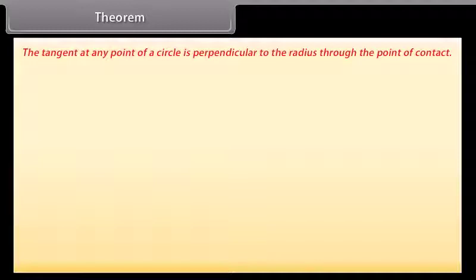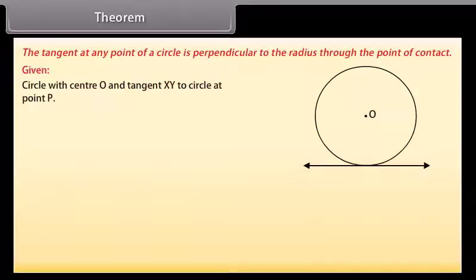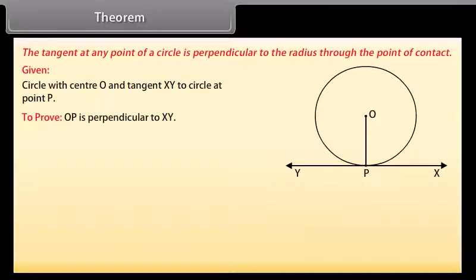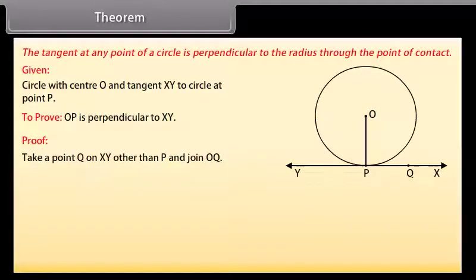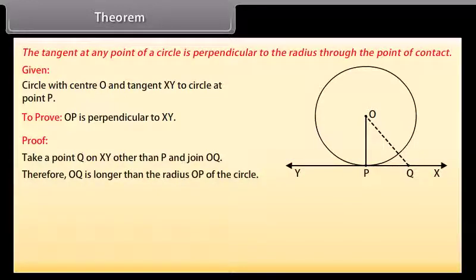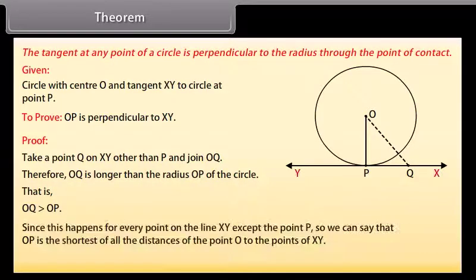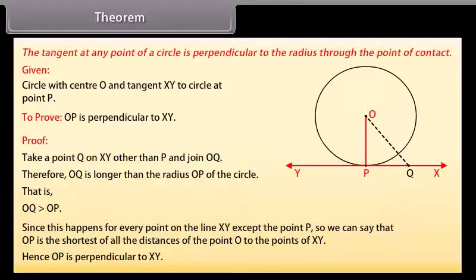Theorem: The tangent at any point of a circle is perpendicular to the radius through the point of contact. We are given a circle with center O and a tangent XY to the circle at a point P. We need to prove that OP is perpendicular to XY. Take a point Q on XY other than P and join OQ. The point Q must lie outside the circle, because if Q lies inside the circle then XY will become a secant and not a tangent. Therefore OQ is longer than the radius OP, that is OQ is greater than OP. Since this happens for every point on the line XY except the point P, OP is the shortest of all the distances from point O to points on XY. Hence OP is perpendicular to XY.